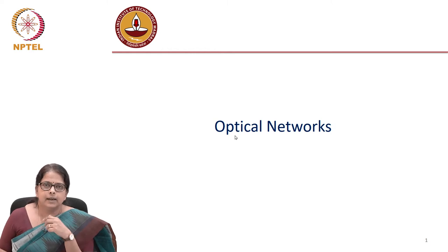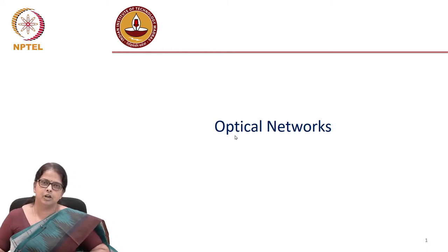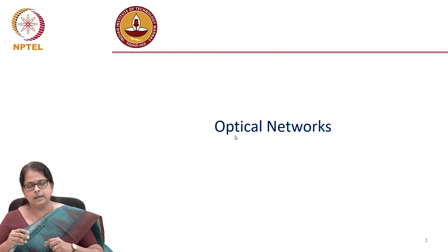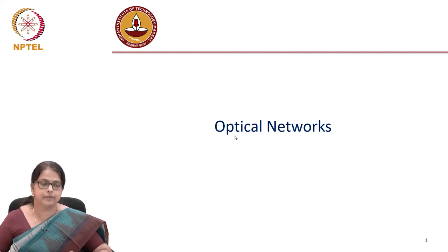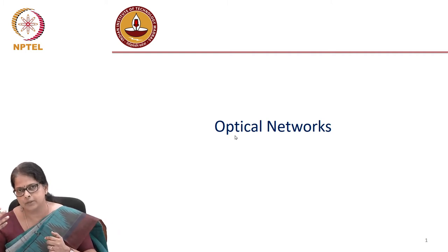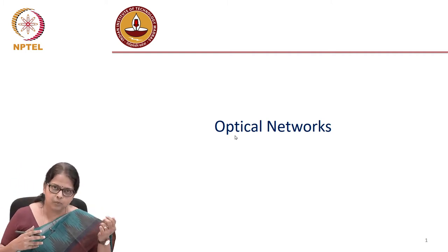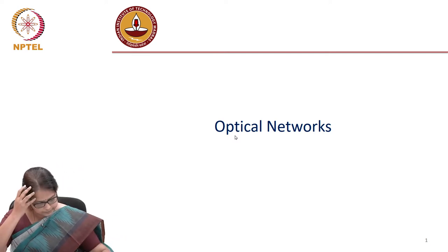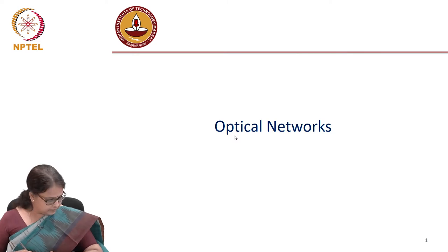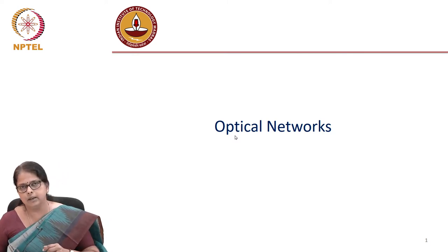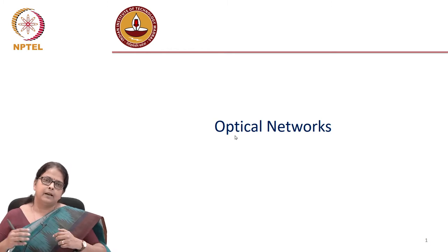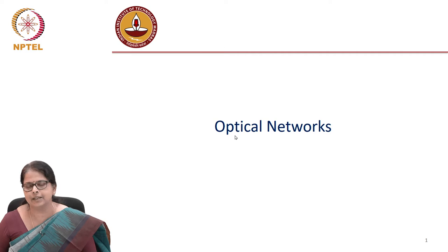When we talk about a communication network, the communication needs to be established not just between two points. There could be multiple users involved, geographically located in different locations. The type of services each user demands could be different — some wanting to transfer data, some wanting to transfer voice, some transferring video. Communication network refers to this interconnection between different users, involving a set of rules so that different users can access the network in a standardized manner.